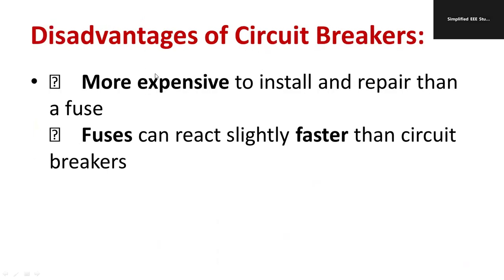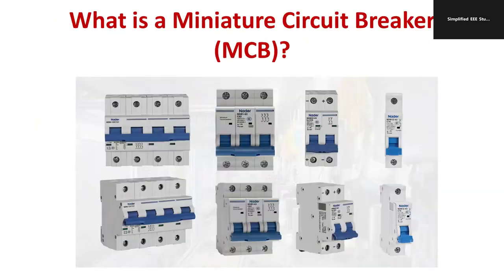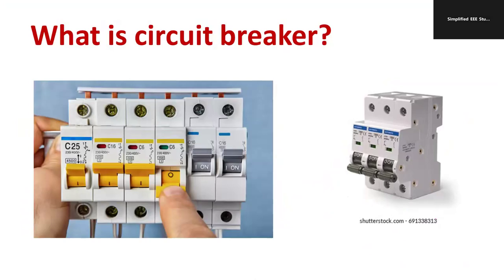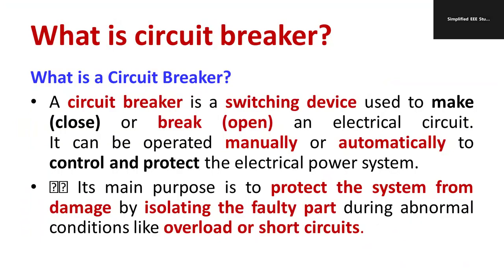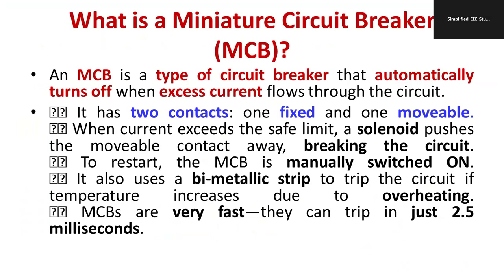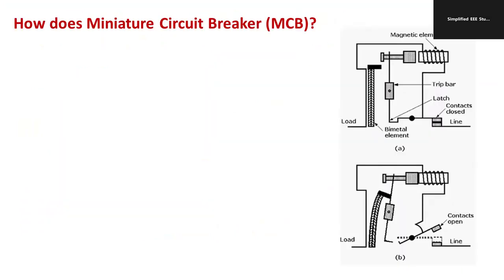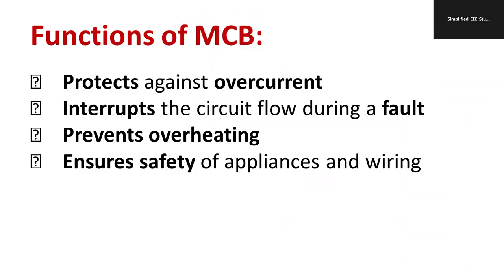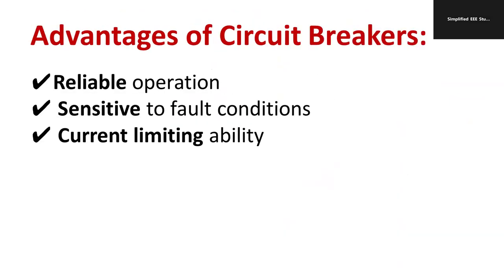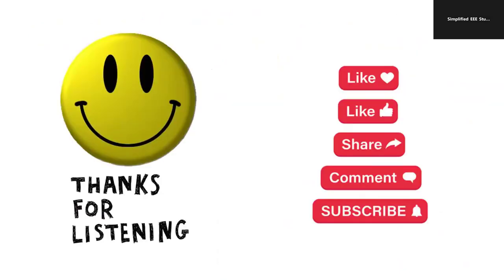The major drawbacks are that MCBs are more expensive to install and maintenance is difficult. In some cases, fuses can react slightly faster than circuit breakers. In this video, I discussed what a circuit breaker is, its practical view, how it works, what fixed and moving contacts are, and how it isolates the healthy portion from the faulty portion. I also covered the functions, pros, and cons of MCB. If you have any queries, use the comment box. Please like and share the video with students and staff members.